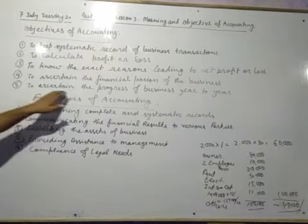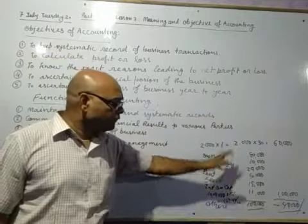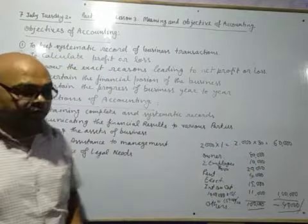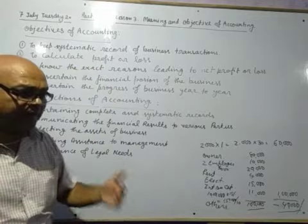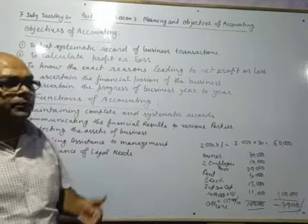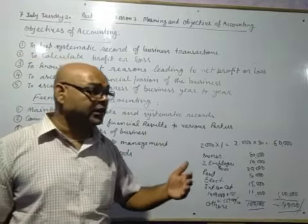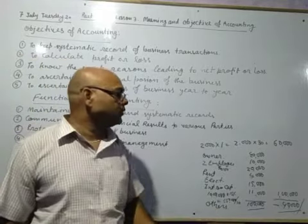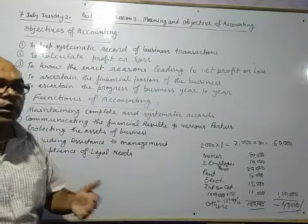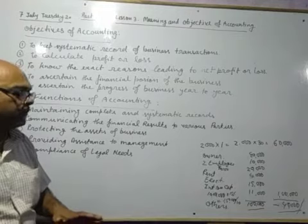Next: to ascertain the progress of the business year to year. From the profit and economical position, it is decided that if their assets are increasing year to year, and their profit is increasing year to year, then the firm is making progress. Or, if they are not increasing, the firm is not making progress.